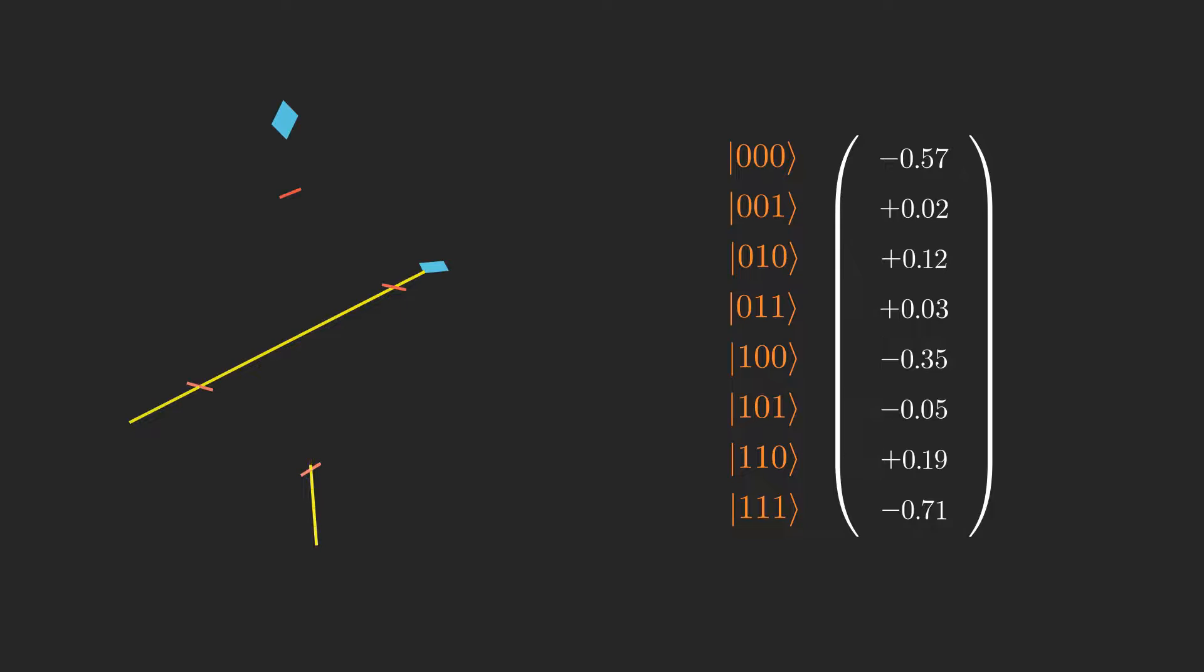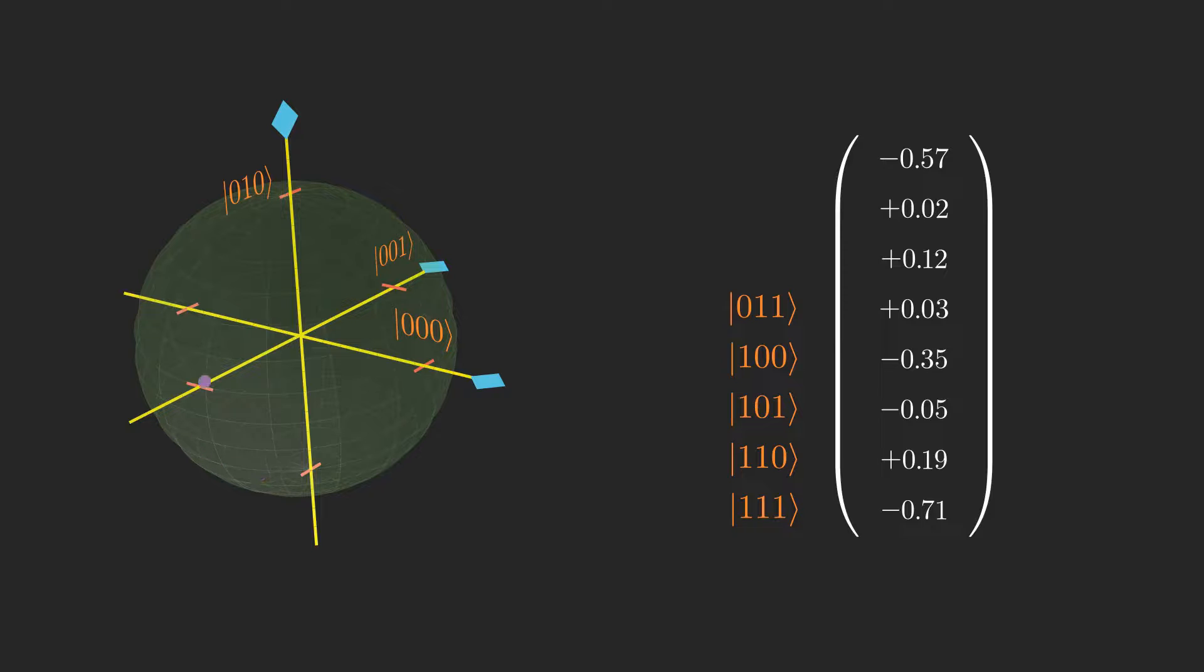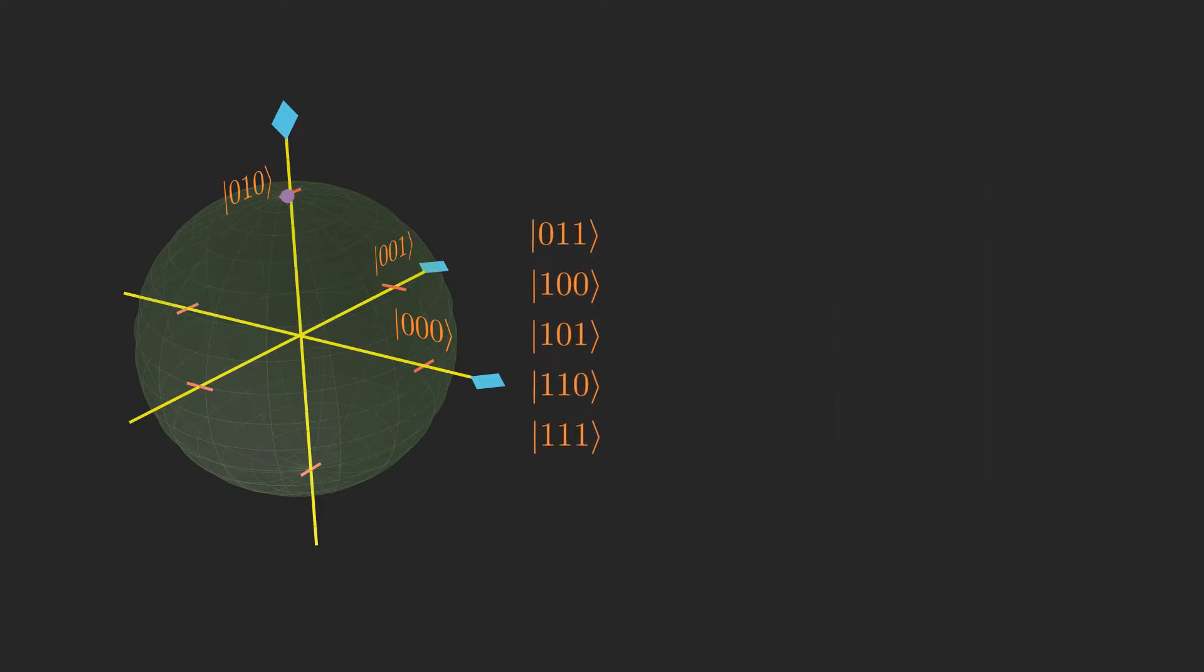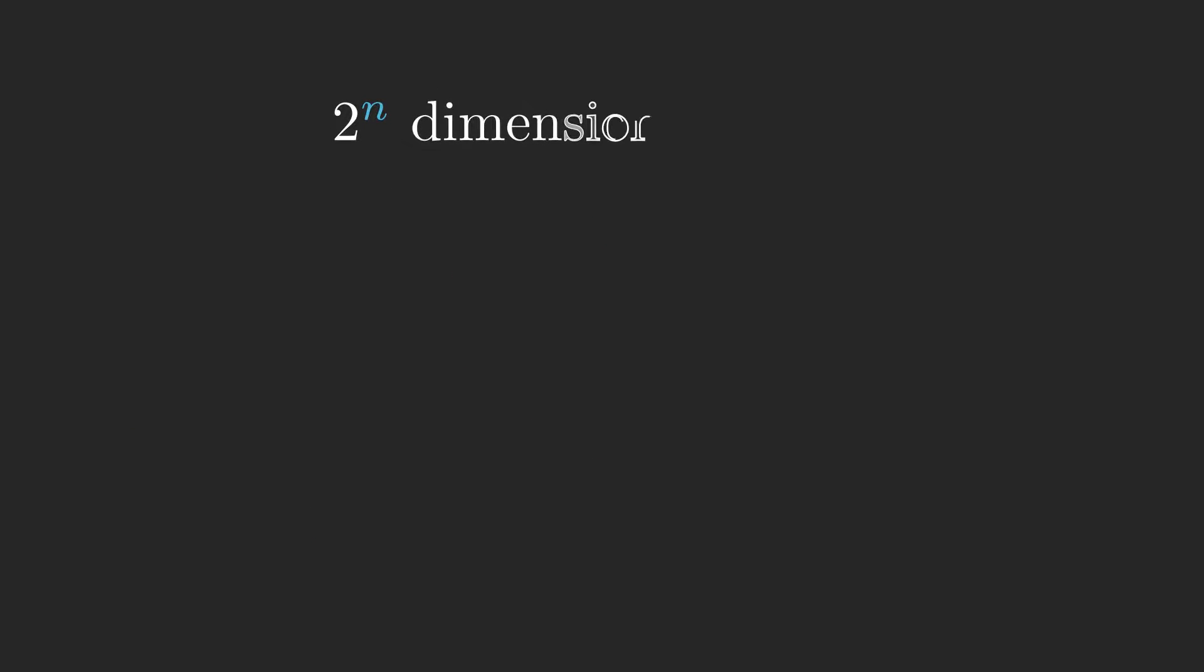Each basis state can be thought of as existing one unit away from the origin on one of 2 to the n orthogonal axes. The sum of the squares of the amplitudes must equal 1, so geometrically, that means that the state of the qubits can be represented with a single point on the 2 to the n dimensional unit sphere. But did you notice the problem? In this geometric interpretation, for any number of qubits more than 1, we already need at least 4 dimensional space, which is more than we can visualize.